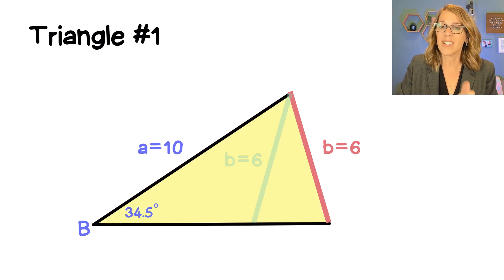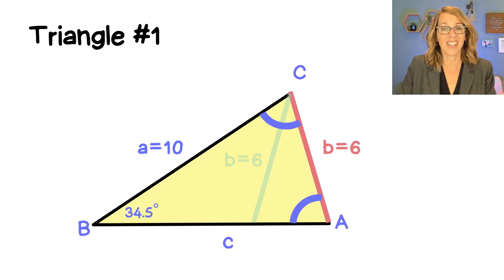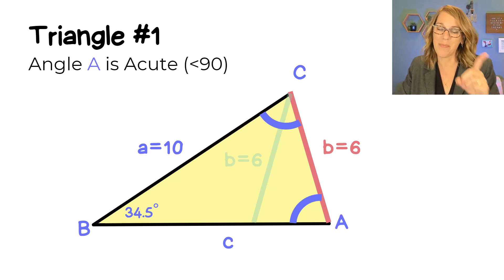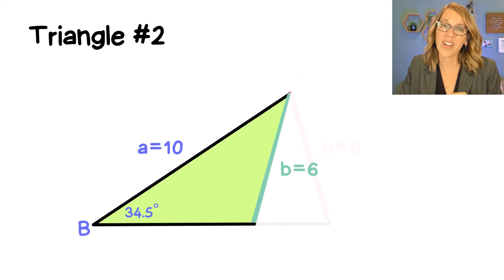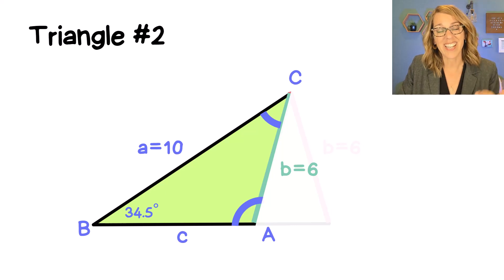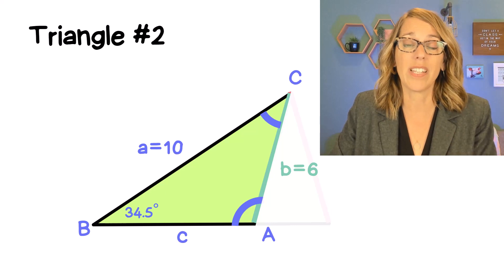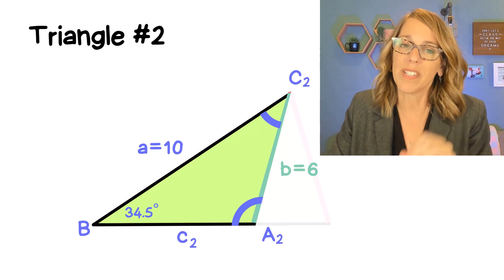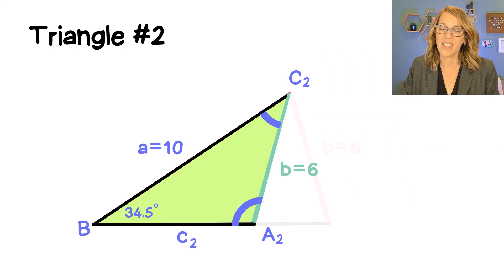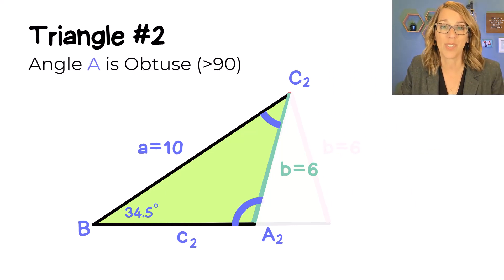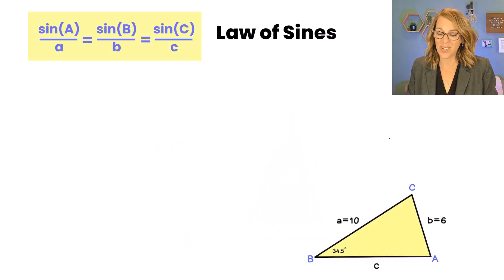In triangle one we need to find angles A and C and side C. Notice that angle A here is an acute angle — that's going to become important. In our second triangle, the smaller one, we still need to find angles A and C and side C, but they're going to be very different values. So let's give them subscripts of two. Take a look at that angle A — it is larger than 90 degrees, so it's an obtuse angle. Let's go back to that first triangle and the law of sines.